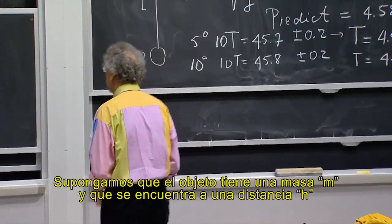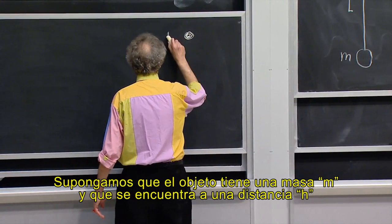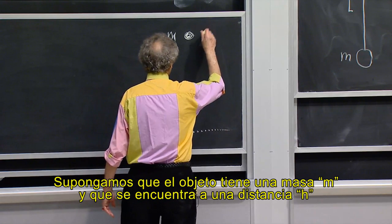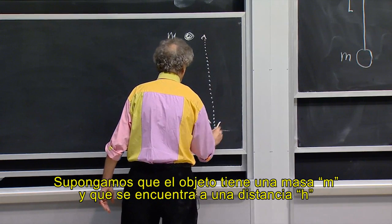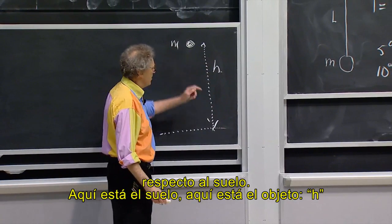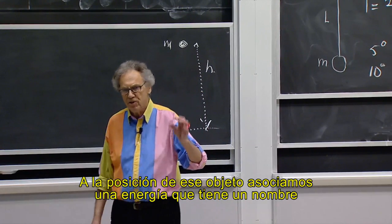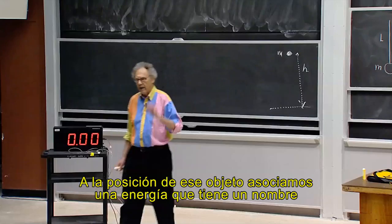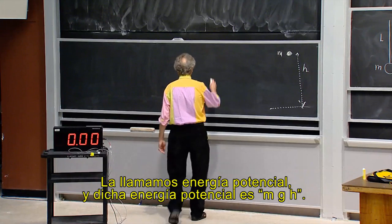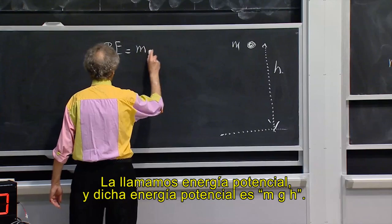Suppose the object has a mass m and is a distance h from the floor. Here's the floor, here's the object, h. We associate with the position of that object an energy that has a name. We call that potential energy.